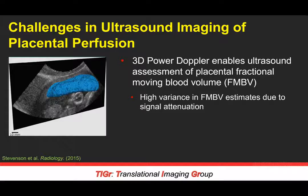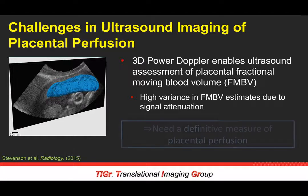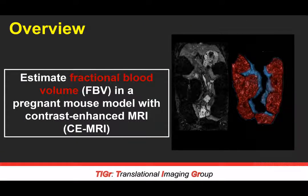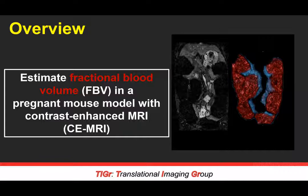However, Doppler ultrasound has high variance in estimates and is very difficult to get clear results for. This motivates us to find a definitive, direct measure of placental perfusion. We can do this using contrast-enhanced MRI. In this part of the talk, I'll show how we can estimate fractional blood volume, FBV — a direct measurement of tissue blood volume — in a pregnant mouse model using contrast-enhanced MRI, performing T1 mapping both pre- and post-administration of the liposomal gadolinium agent.